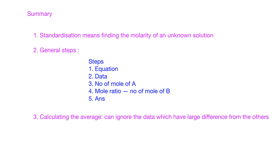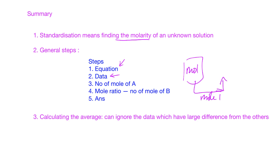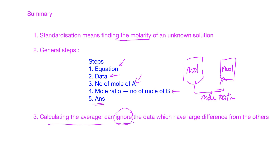To summarize: standardization means finding the molarity of an unknown solution. The general steps are: write a balanced equation, write down the relevant data, find the moles of the known substance, use mole ratios to find moles of the other substance, then calculate the answer. When calculating the average volume, remember you may need to ignore one reading that has a large difference from the others. That's all for this video.